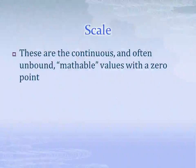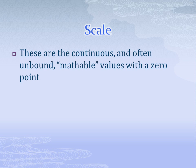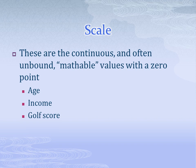Lastly, and easiest to understand, are scale variables. These variables are continuous and usually unbound, and have an intrinsically meaningful zero point. For example, age can range from zero to about 110. Income, on the other hand, can be either positive or negative and has no real bounds. Notice that in the case of income, zero is also a meaningful value, though perhaps not as desirable as in golf.